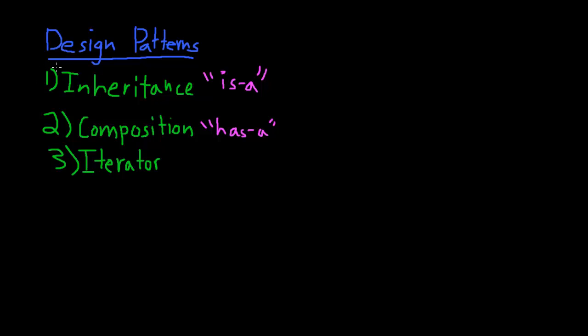The three design patterns are inheritance, composition, and iterator. And I'm going to be explaining each one, one by one.